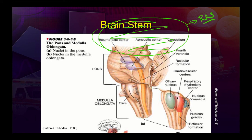Just below the midbrain, the pons and medulla together govern our vital signs — both voluntary and involuntary. The pons is more responsible for involuntary control of respiration. The medulla oblongata contains our vital centers: cardiovascular centers controlling heart rate, strength of contraction, and blood vessel constriction and dilation affecting blood pressure, as well as a role in ventilation.